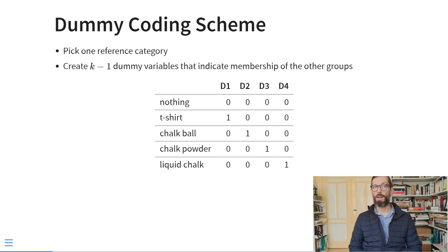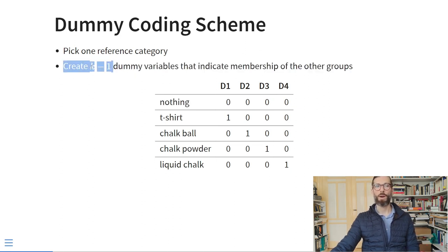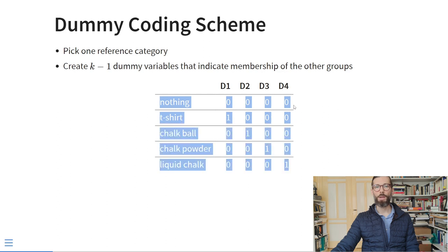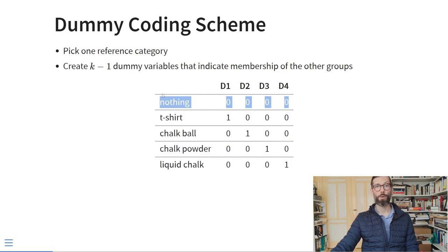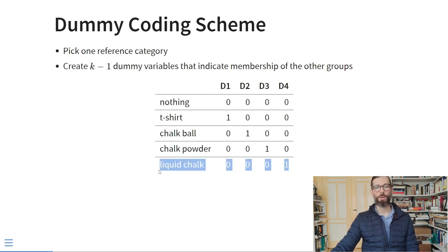We can code the categorical predictor in different ways. In the familiar dummy coding scheme, we pick one reference category — in this case, using nothing — as the sensible control condition. Then we create k minus one dummy variables, where k is the total number of groups. These dummy variables indicate membership of one of the other groups. So we have five groups and four dummy variables: one each for the t-shirt, chalk ball, chalk powder, and liquid chalk conditions.